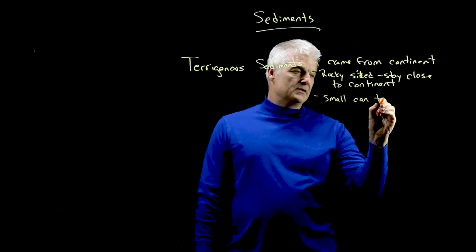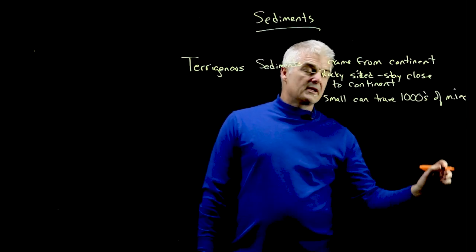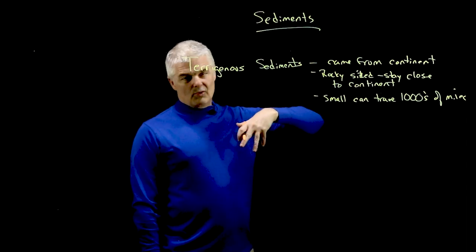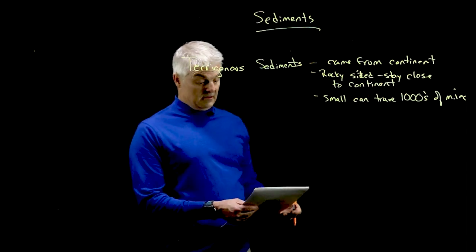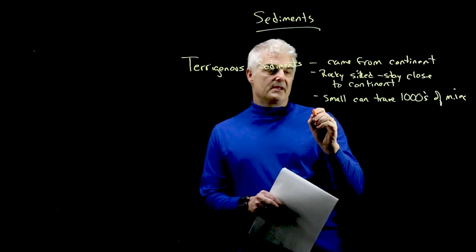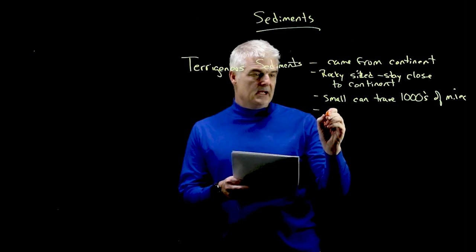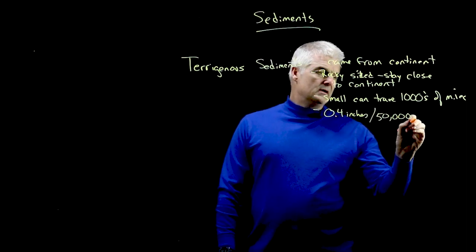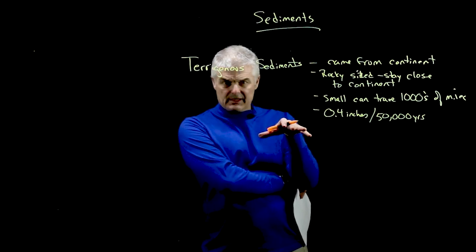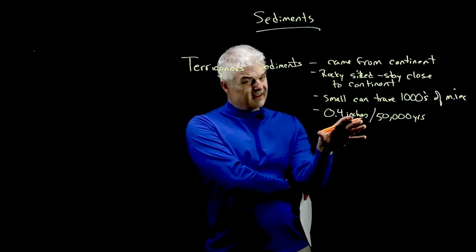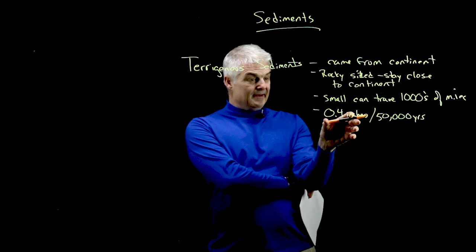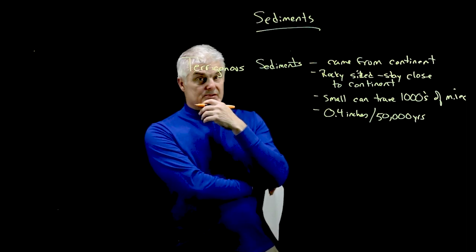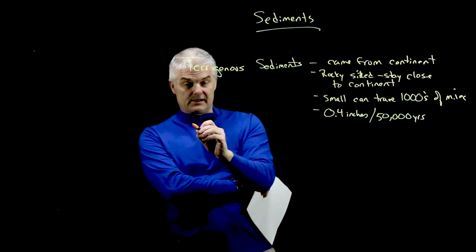But the small ones, the clay-sized ones, can travel thousands of miles out into the middle of the ocean. There are currents in the ocean, so once sediment gets into a current it can go a long, long way. It turns out that in the deep parts of the ocean, sediment accumulates about 0.4 inches every 50,000 years — about half an inch every 50,000 years. Those are terrigenous sediments — that's the first kind.